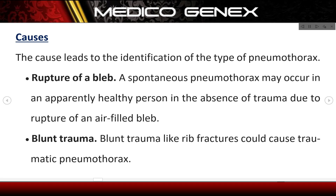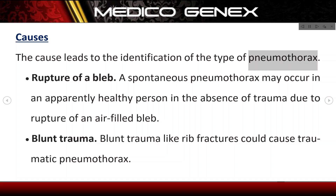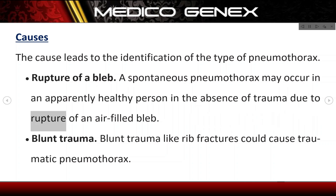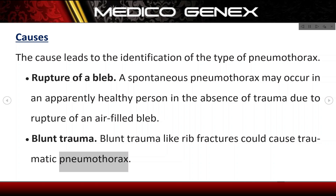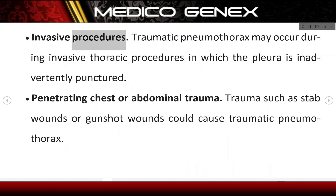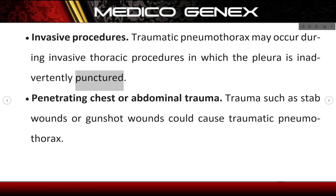Causes. The cause leads to the identification of the type of pneumothorax. Rupture of a bleb — a spontaneous pneumothorax may occur in an apparently healthy person in the absence of trauma due to rupture of an air-filled bleb. Blunt trauma — blunt trauma like rib fractures could cause traumatic pneumothorax. Invasive procedures — traumatic pneumothorax may occur during invasive thoracic procedures in which the pleura is inadvertently punctured.